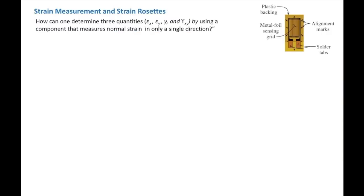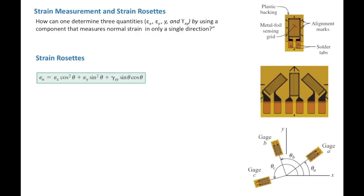Assume that we have one strain gauge which can measure strain in one direction. Our goal is to determine strains at that point in x, y, and also shear strain. To do that, we need at least three strain gauges because we have three components at one point. Remember that on the surface of an element, we have a plane stress situation with three independent components: σx, σy, τxy — and similarly εx, εy, and γxy. To determine those three independent components, we need three strain gauges.